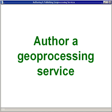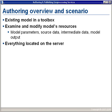The second section we're going to look at is authoring a geoprocessing service. For today, we have a scenario where we have an existing model built in ArcMap that we want to publish to ArcGIS Server. This model already exists in a toolbox. To publish it, we need to examine and modify some of the model's resources: the model parameters, source data used in the model and map, intermediate data, and the model output.